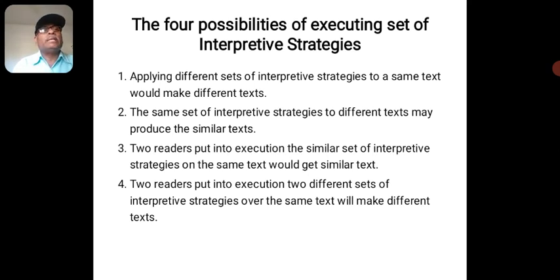The four possibilities of executing a set of interpretive strategies. First one, applying different sets of interpretive strategies to the same text would make different texts. The same set of interpretive strategies to different texts may produce similar texts. Two readers put into execution the similar set of interpretive strategies on the same text would get similar texts. Two readers put into execution two different sets of interpretive strategies over the same text will make different texts.